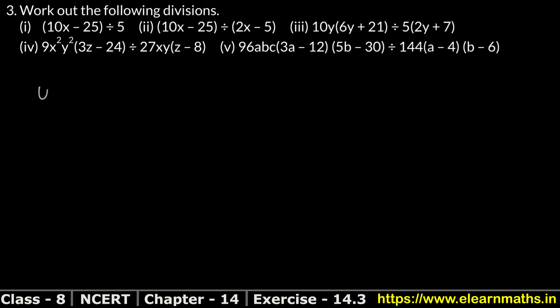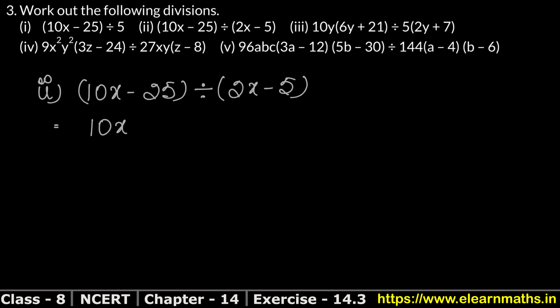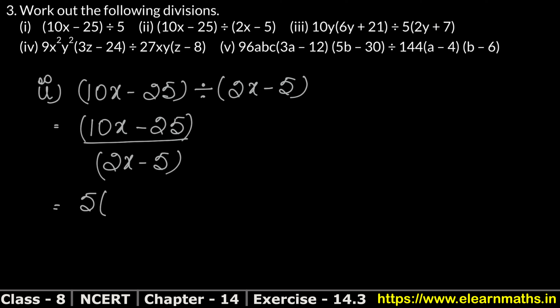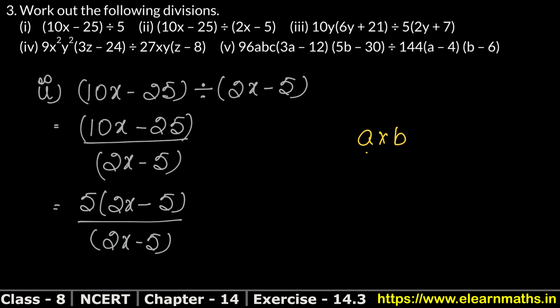Now the second part: 10x minus 25 divided by (2x minus 5). The value above is 10x minus 25, and the value below is (2x minus 5). In the numerator, 5 is common, giving us 5(2x minus 5) upon (2x minus 5). Since both brackets are the same and are multiplied, they cancel — like a times b upon b, where b cancels. So the answer is 5.